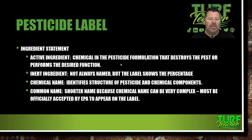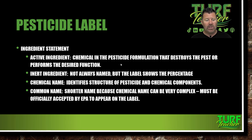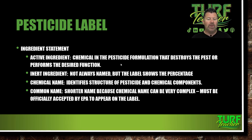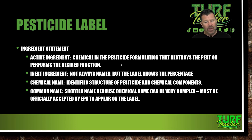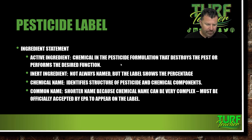Your ingredient statement: the active ingredient is the chemical in the pesticide formulation that destroys the pest or performs the desired action. The inert ingredient is not always named, but the label shows the percentage of it. The chemical name identifies the structure of the pesticide and the chemical components in it. Common name is a shorter name — because the chemical name can be very complex — and it must be officially accepted by the EPA to appear on the label.